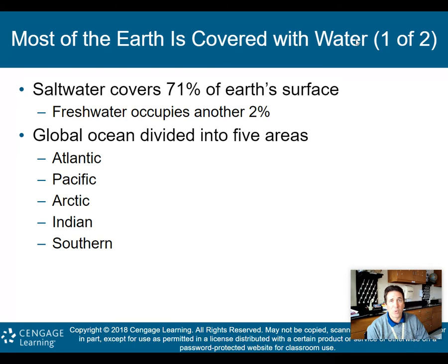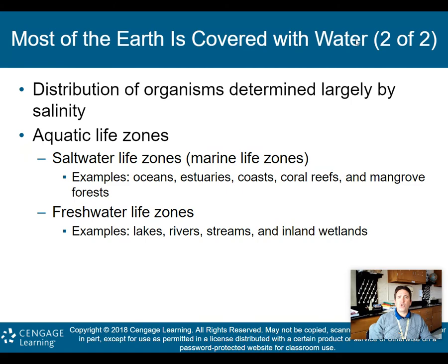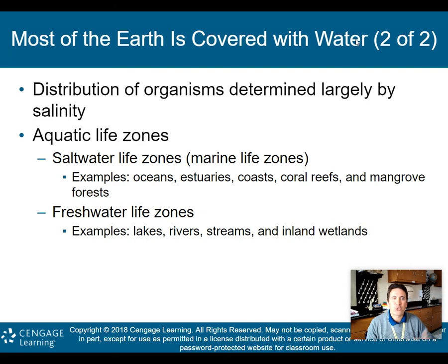Only 2% of Earth's water is freshwater — the only water humans can use to irrigate crops and drink. The global ocean is divided into five areas: the Atlantic, the Pacific, the Arctic, the Indian Ocean, and the Southern Ocean, which surrounds Antarctica. The distribution of organisms is determined largely by salinity — how much salt is in the water determines the type and distribution of organisms present.